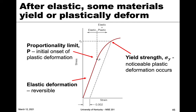Up to point P, if we unload the material it's going to go back to its original size and shape. However, once it reaches point P, you notice it's starting to deviate from the linear behavior — that's one indication that something else is happening. That's where we have plastic deformation, and this particular point is known as the proportionality limit P. It represents the initial onset, basically the very first indication of plastic deformation.